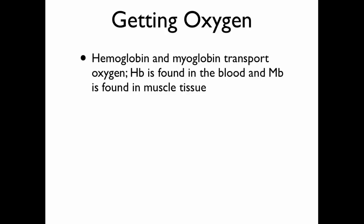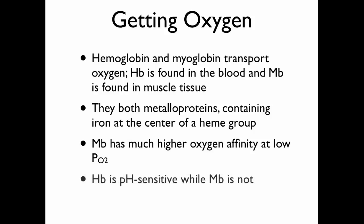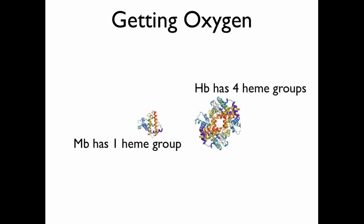Hemoglobin is found in the blood, and myoglobin is found in muscle tissue. They both contain iron at the center of the heme group, but myoglobin has a much higher oxygen affinity at low partial pressures of oxygen, and you'll see what I mean by that in just a few minutes. Another big difference between the two molecules is that hemoglobin is pH sensitive, while myoglobin is not.